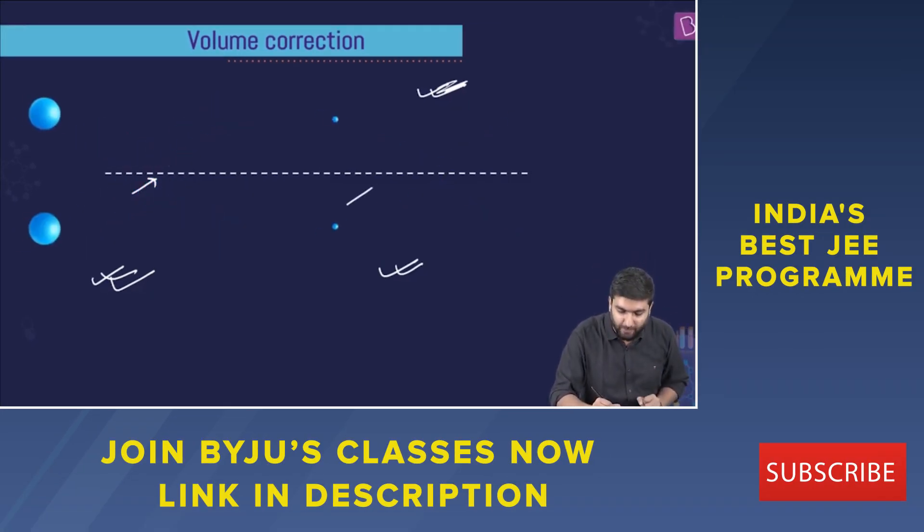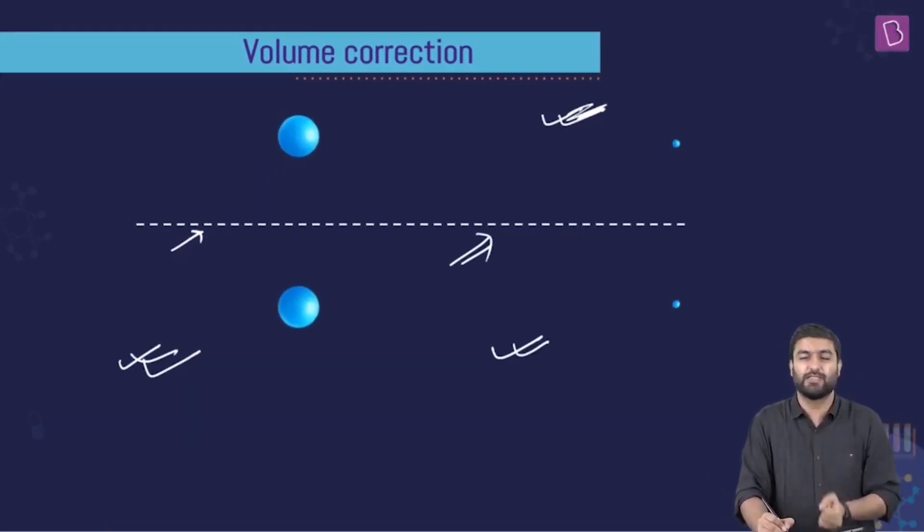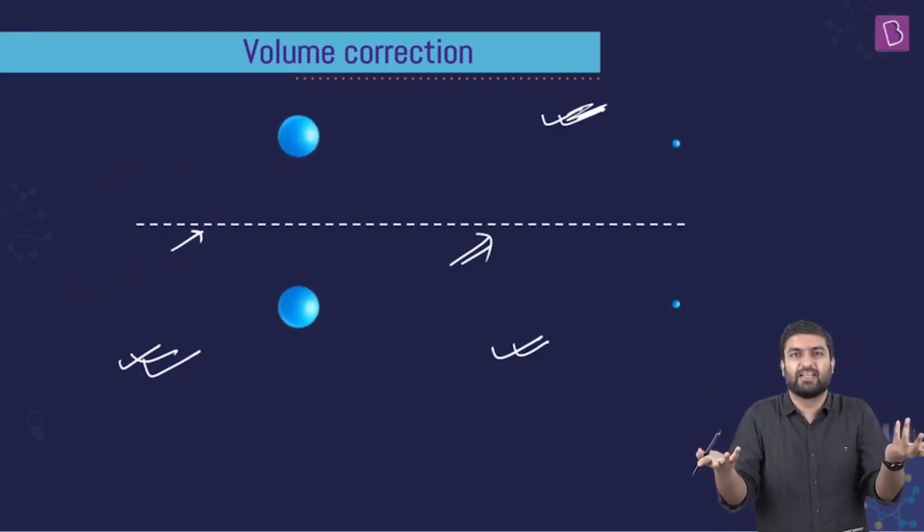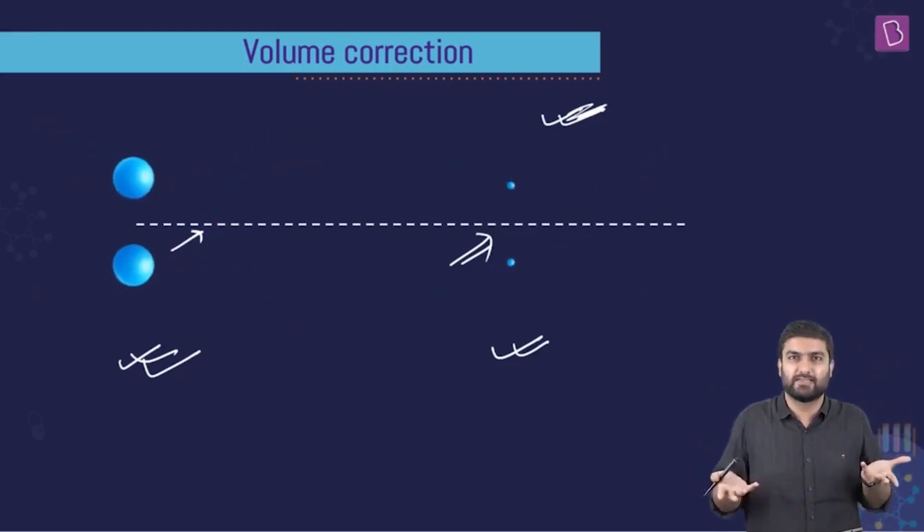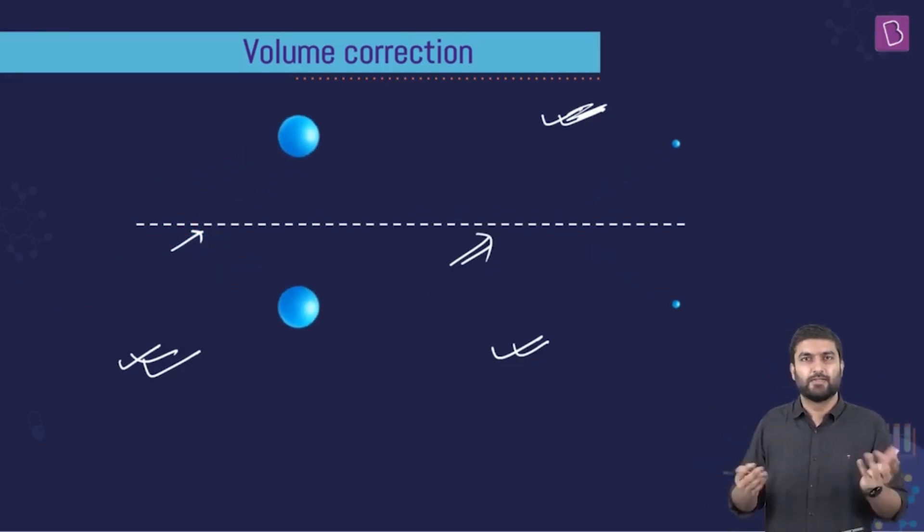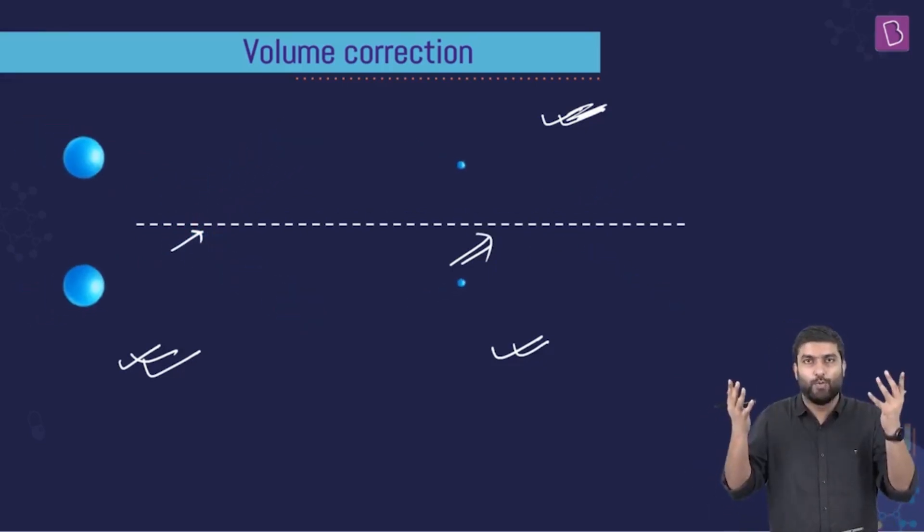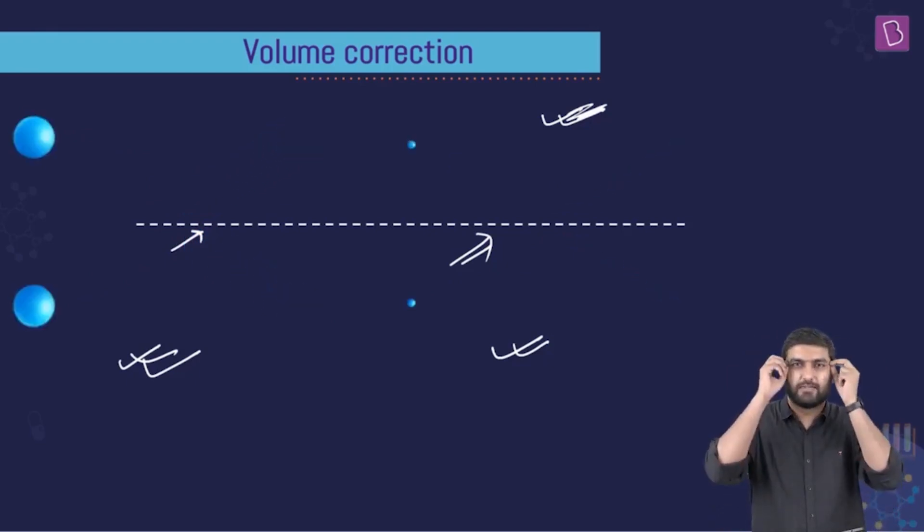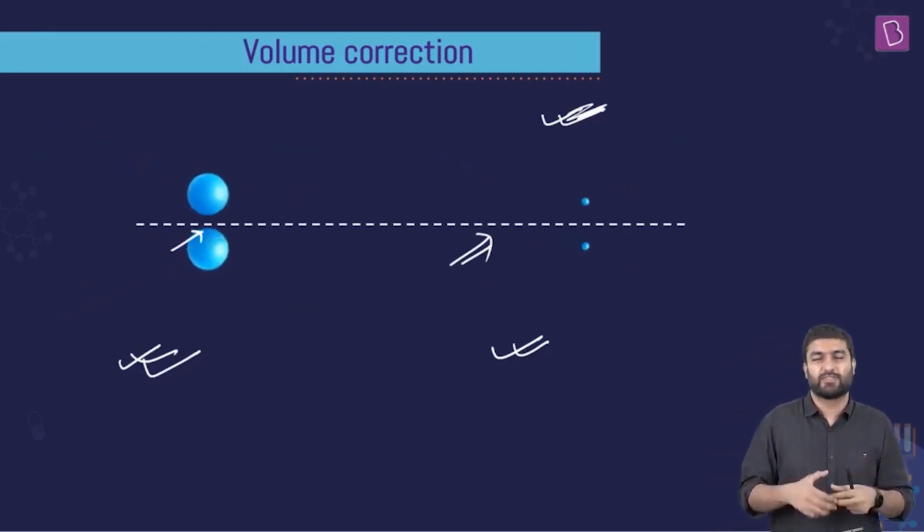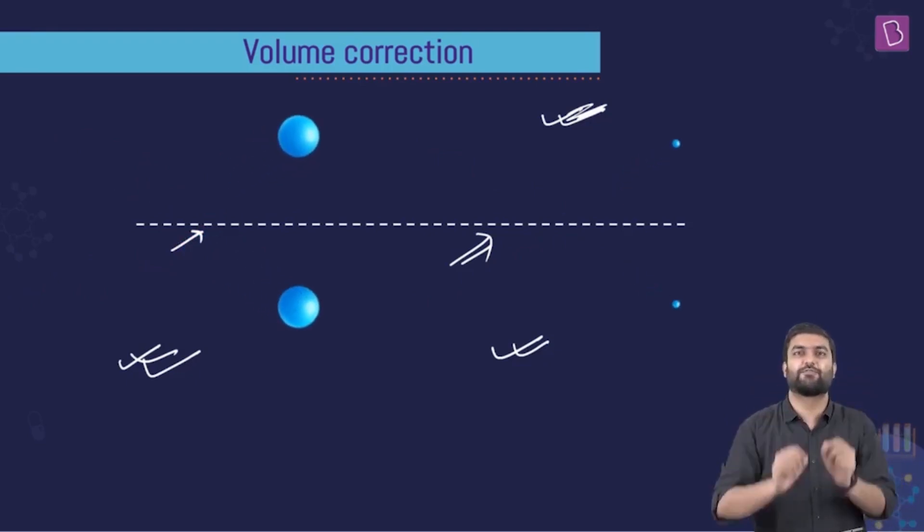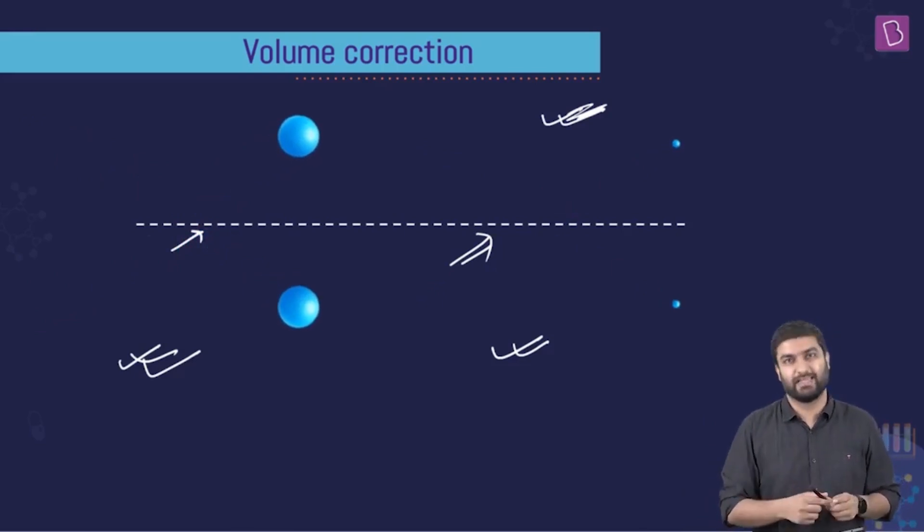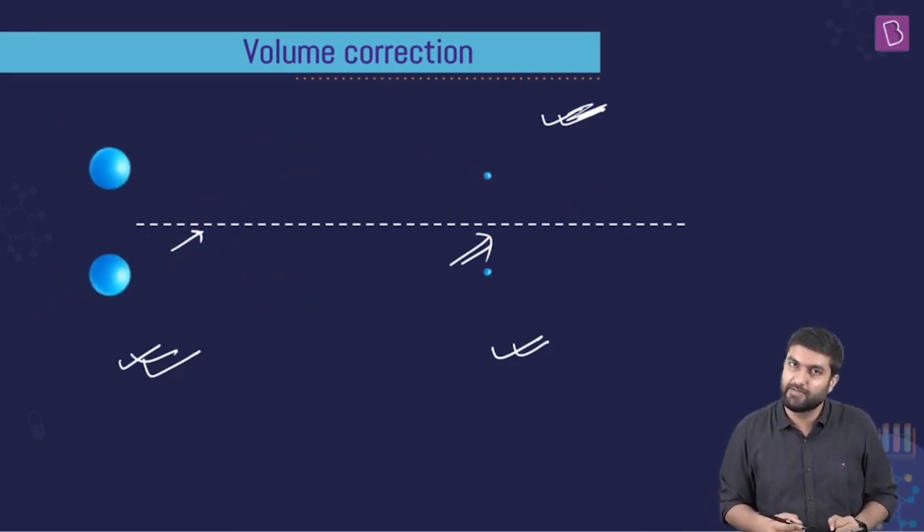But when you see this from an ideal perspective, they do not get in touch with each other. There is no touch point and they're deflecting without getting in touch with each other. Why is this happening? Is this some magic? Is this some sorcery? No, these are not actually ideal particles. You just wore a certain magical spectacle, which is showing you the center of mass of these real particles, which indeed are getting in touch with each other.